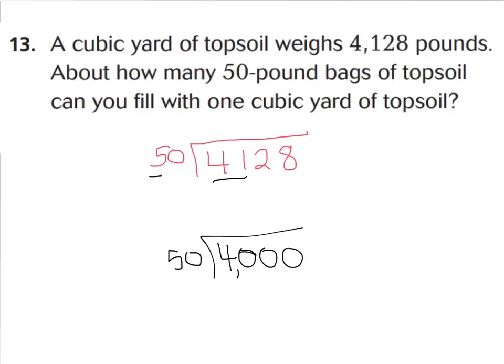Now I can divide quickly and mentally in my head. I know 50 can go into 40 eight times, and we're just going to bring up that zero, because 80 times 50 is 4,000. So we would say 80 is a good estimate. So let's look at our question. If a cubic yard of topsoil weighs 4,128 pounds, about how many 50 pound bags of topsoil can you fill with one cubic yard of topsoil? It would take about 80 bags to make it happen.